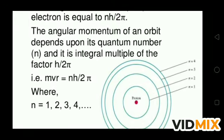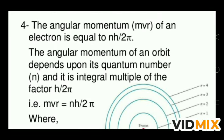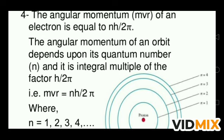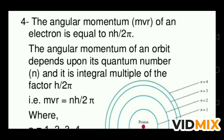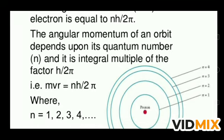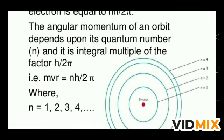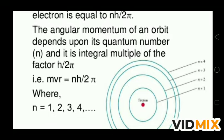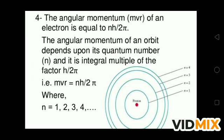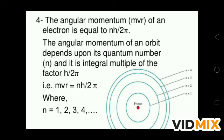The angular momentum of an electron is given by: mvr = nh/2π, where h/2π is a constant. The angular momentum of an orbit depends on its quantum number n and is an integral multiple of h/2π. So for n = 1, 2, 3, 4... you multiply n by h/2π to get the angular momentum for the electron in that particular orbit.